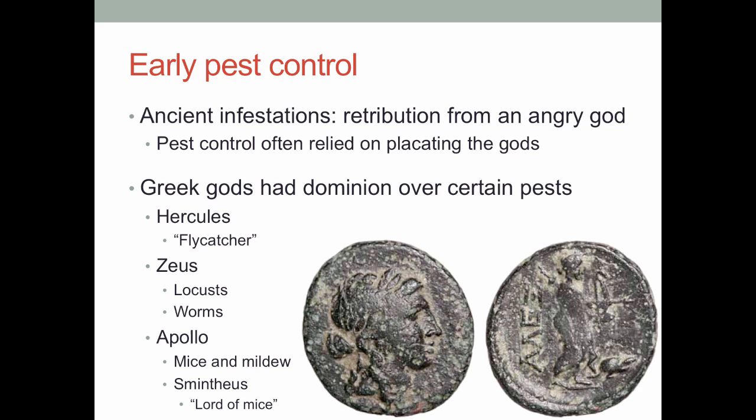Apollo was sometimes referred to as Apollo Smintheus — Lord of Mice — and if you went to some of his temples, they would intentionally build little chambers under his altar for mice to live in. When people would visit, they could leave offerings to the mice as an offering to Apollo and a way to placate mice. Here we have a coin of Apollo from the Greek era, and sure enough you can see a little mouse or rat on the side — so yeah, Apollo and a little rat.